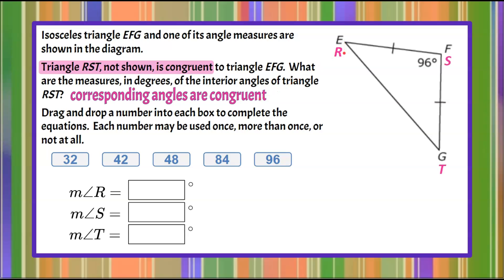So angle E and angle R are the same, angle F and angle S, and angle G and angle T. So triangle EFG is congruent, same size same shape, as RST.